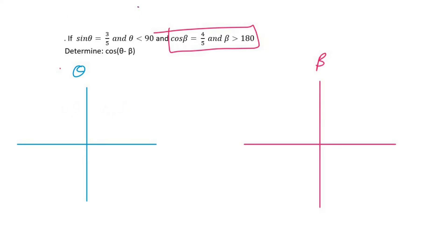So then what we do is we go draw a triangle and this is our theta and then we're going to say that sin is opposite over hypotenuse. You would do Pythagoras and you would find that that is 4.